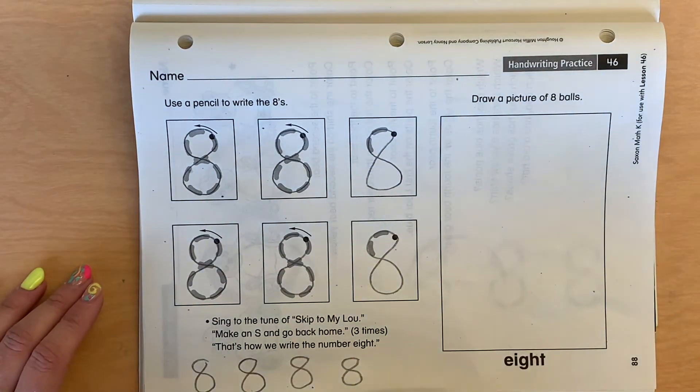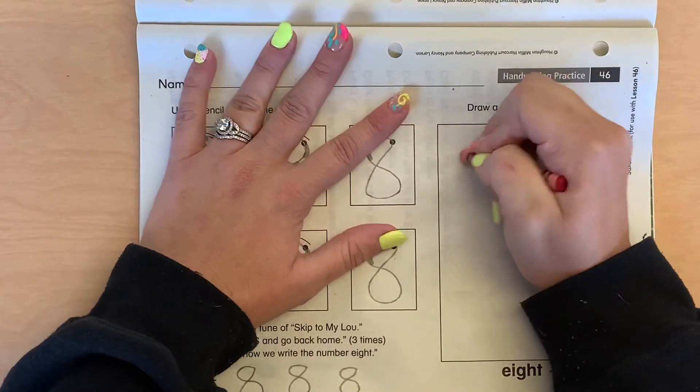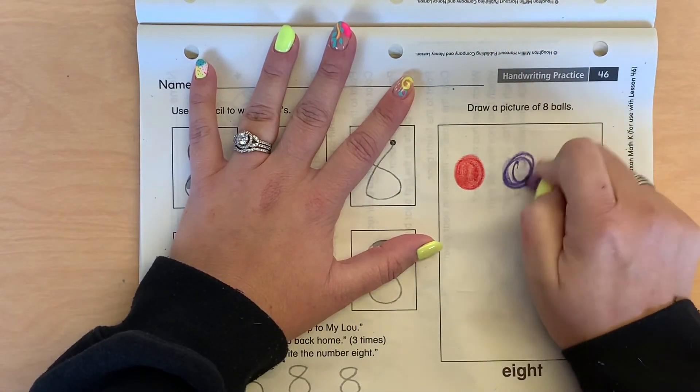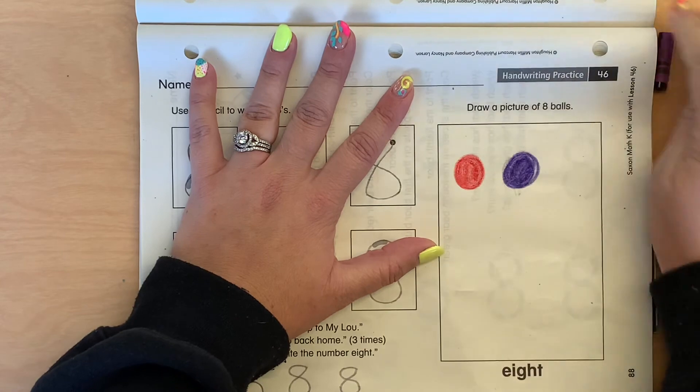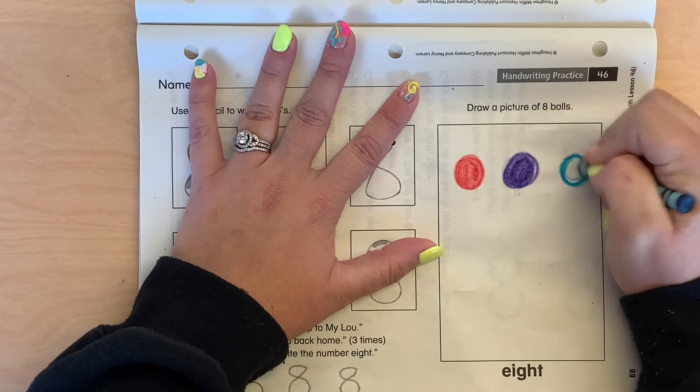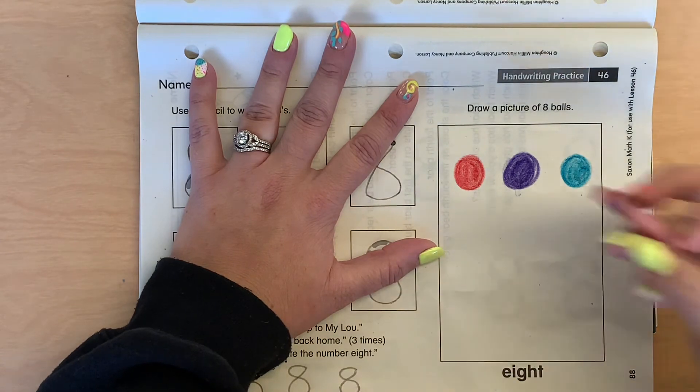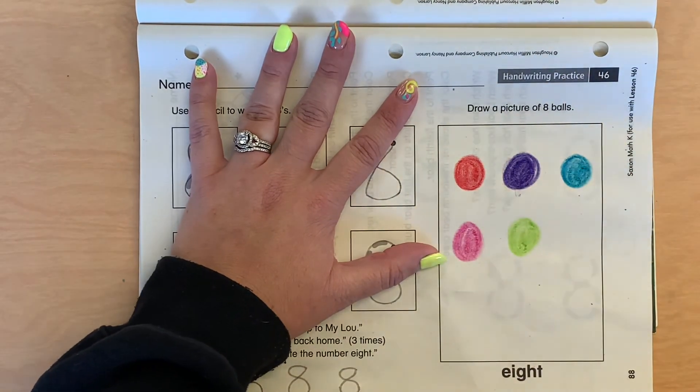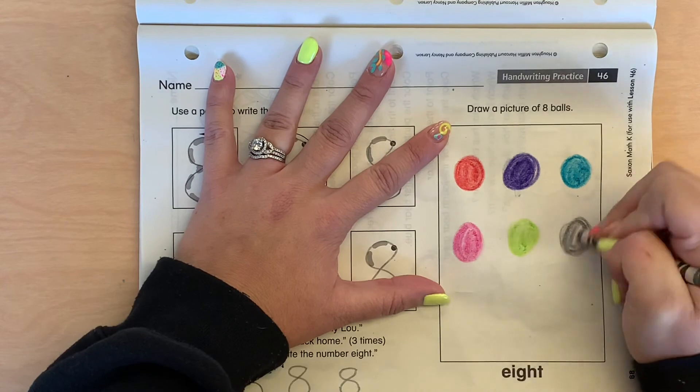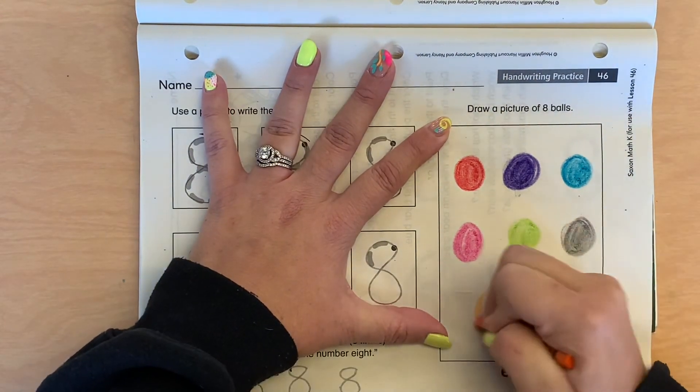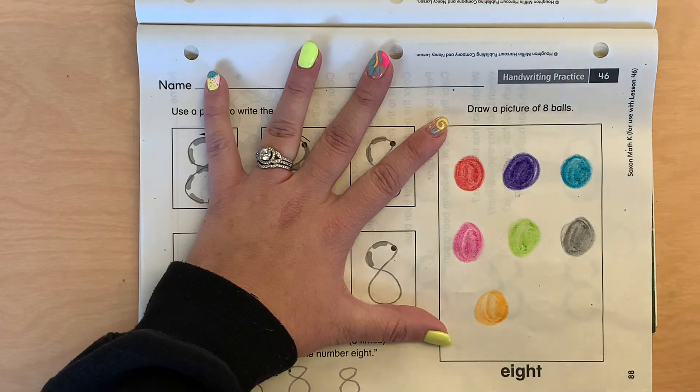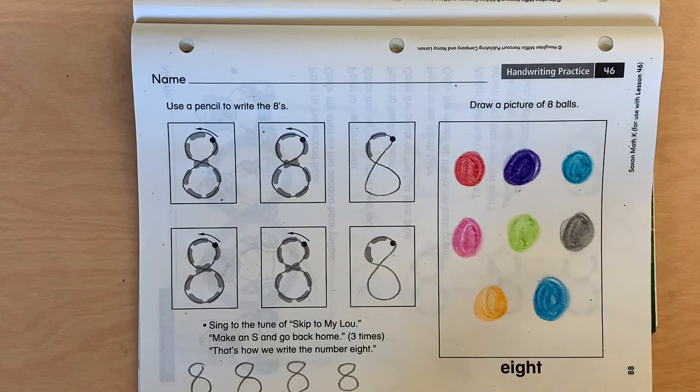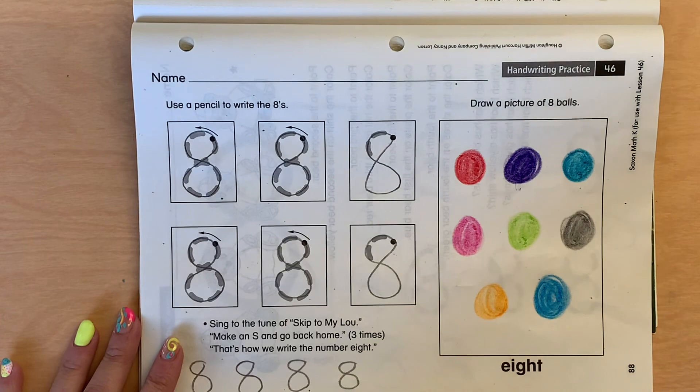Ooh, draw a picture of eight balls. Eight balls. One. Uh oh. I haven't broken a crayon in a while. Two. Three. Four. Five. Six. Seven. Eight. Make sure you draw eight. You have to count as you go. Count as you go to make sure you have eight.